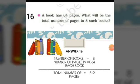A book has 64 pages. What will be the total number of pages in 8 such books? The number of books is 8 and the number of pages in each book is 64. So the total number of pages will be 64 multiplied by 8, which is equal to 512.